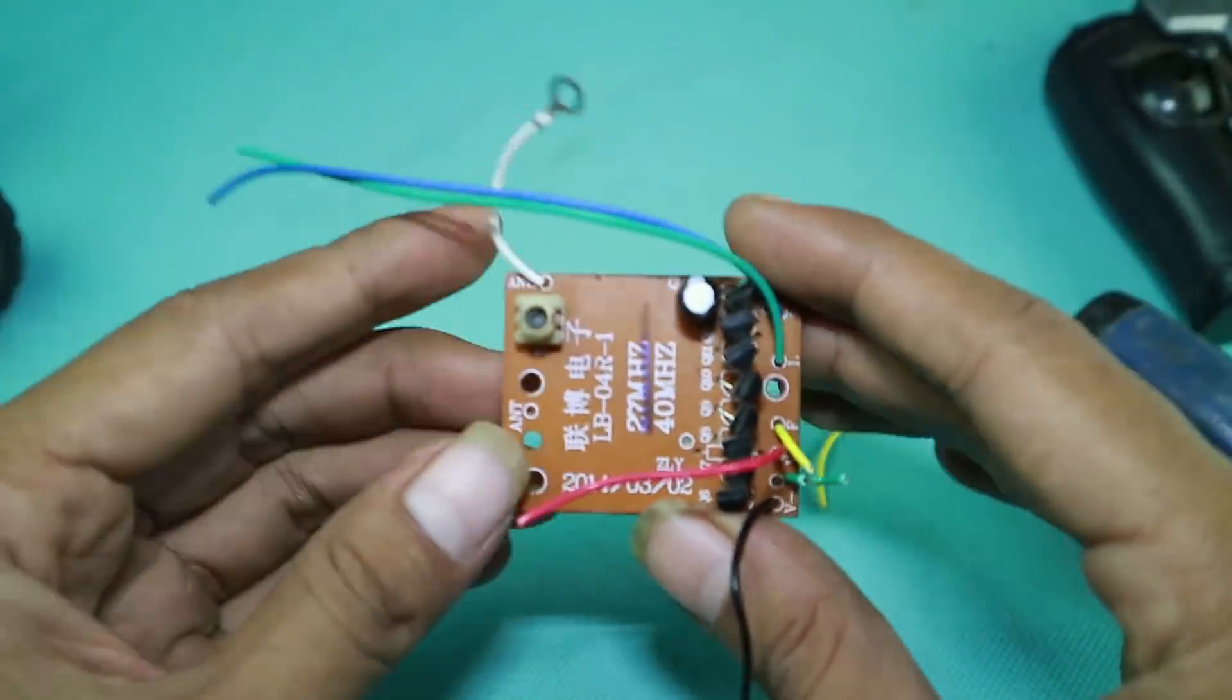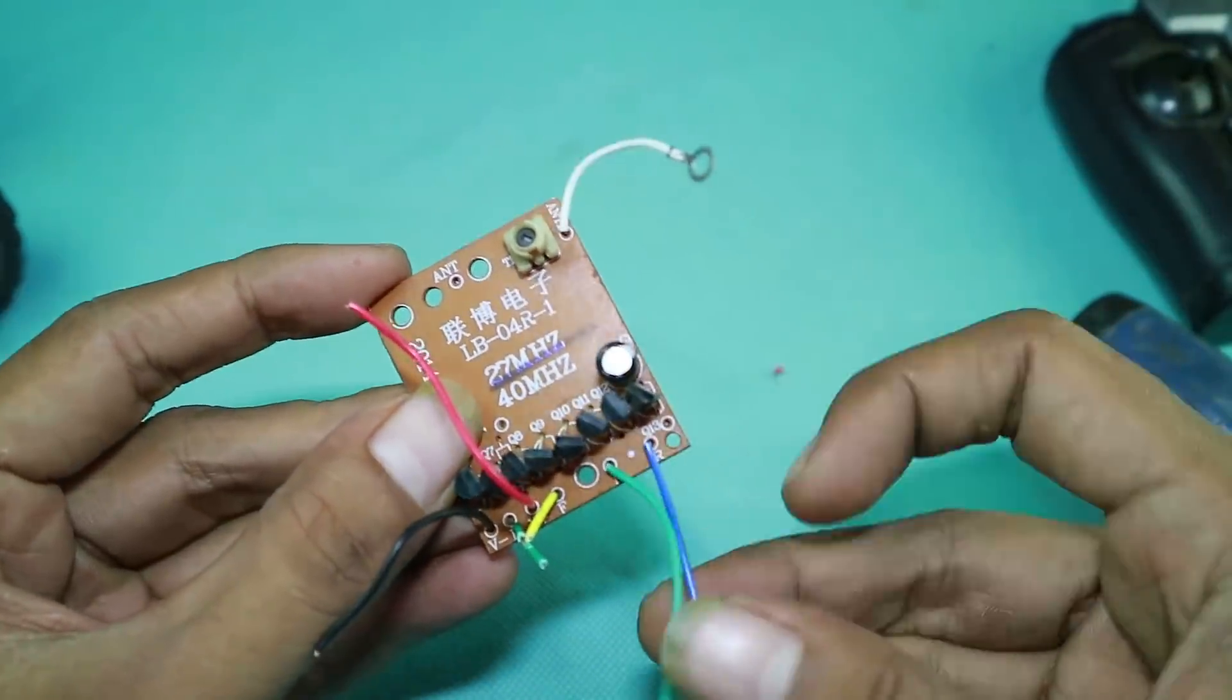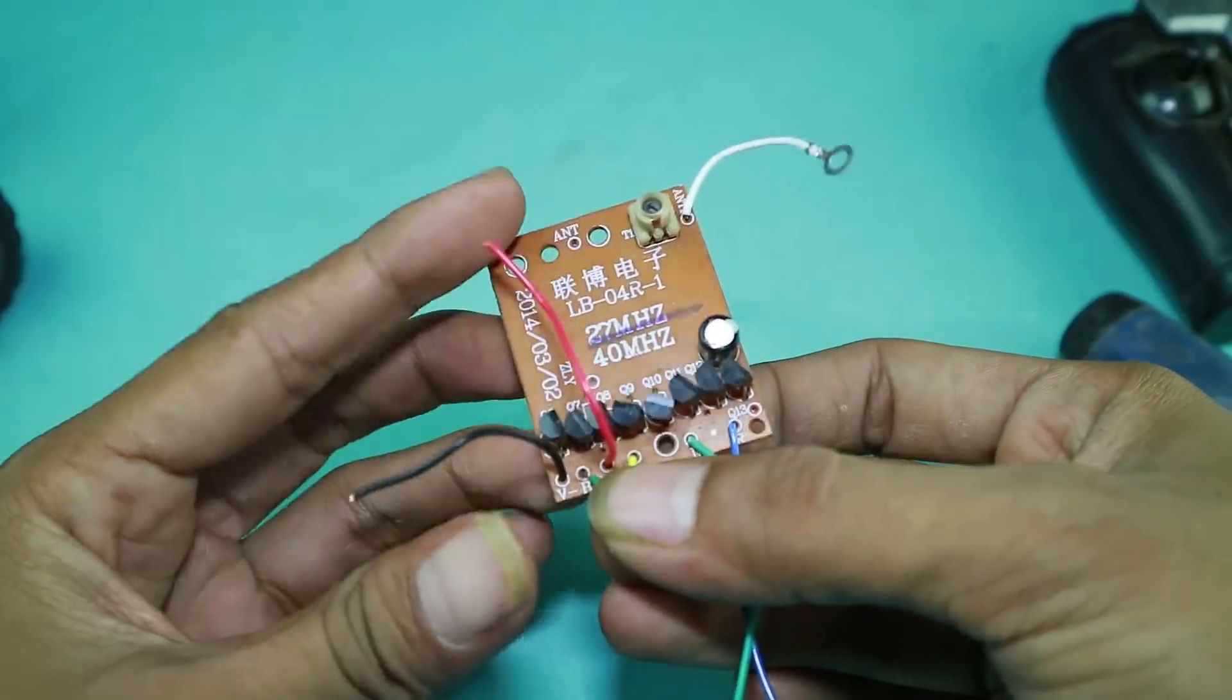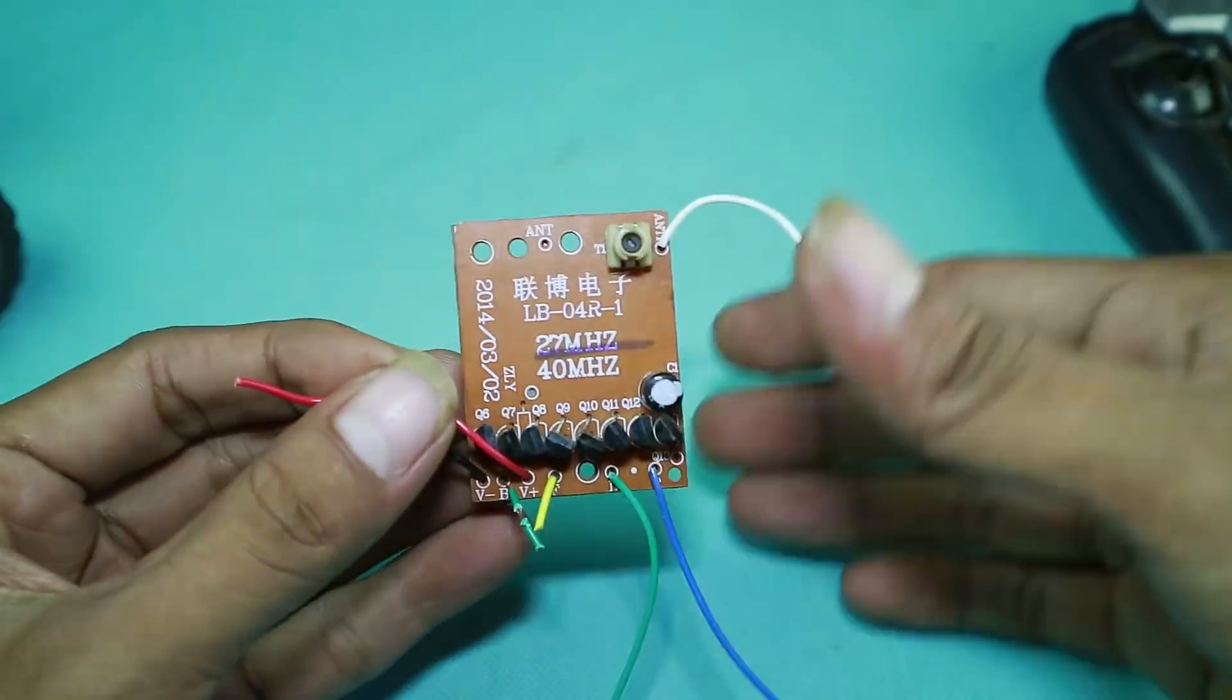Perhatikan kabelnya. Kabel ini jalur dinamo depan, input harus plus minus, dan ini antena.